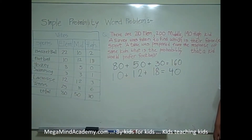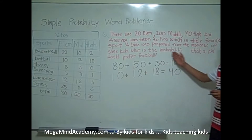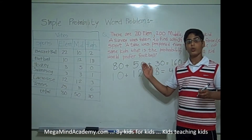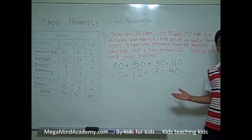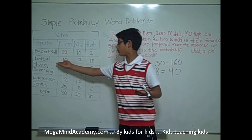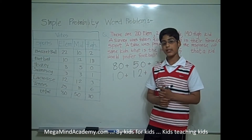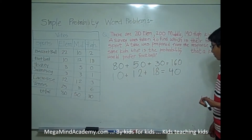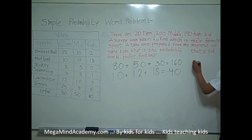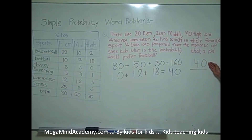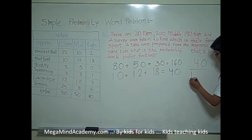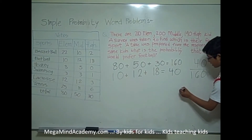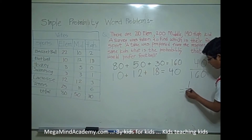Now, the next step to finding out what is the probability that a kid would prefer football would be making a fraction. The numerator would be the number of kids who preferred football, and the denominator would be the total number of kids surveyed. So we would do 40 over 160.